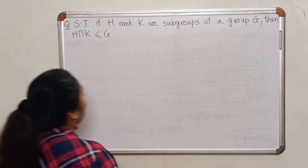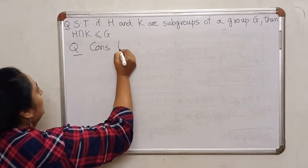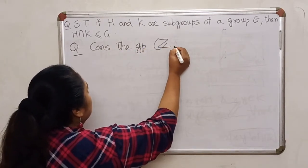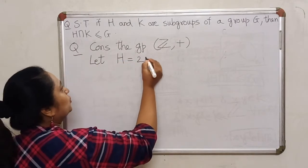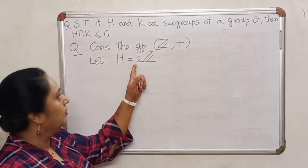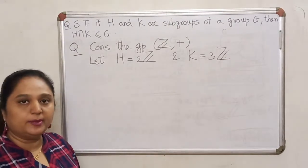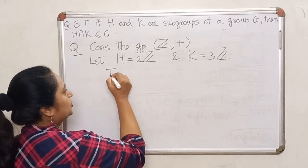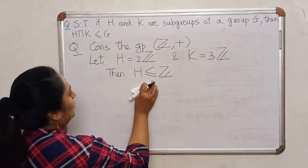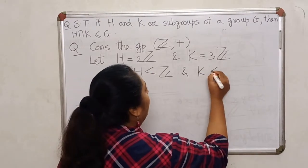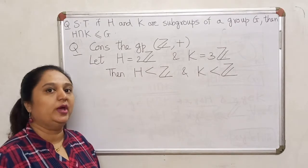So we are now trying to prove that union of two subgroups is not necessarily a subgroup. Consider the group Z, where the group operation is addition of integers. Let H be 2Z, the set of all multiples of 2, which is the set of all even integers. And let K be 3Z, which is the set of all multiples of 3. Then H is a subgroup of Z and K also is a subgroup of Z. Now let us see what happens to H ∪ K.